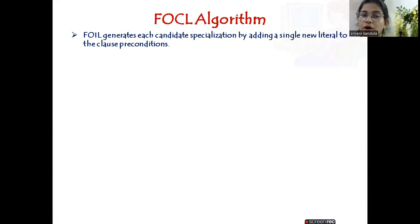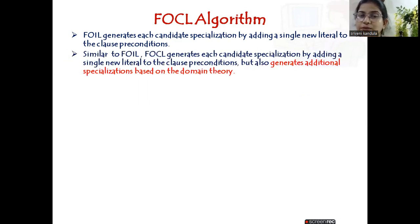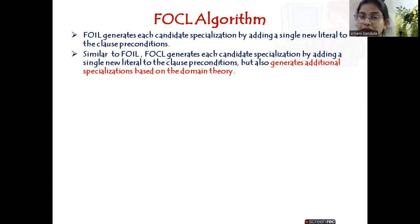The FOIL algorithm, which we have already discussed, generates candidate specializations by adding new literals to the clause's conditions. Similar to FOIL, FOCL also generates candidate specializations by adding a single new literal to the clause's conditions, but it also generates additional specializations based on the domain theory.